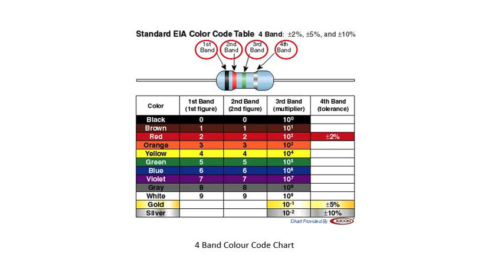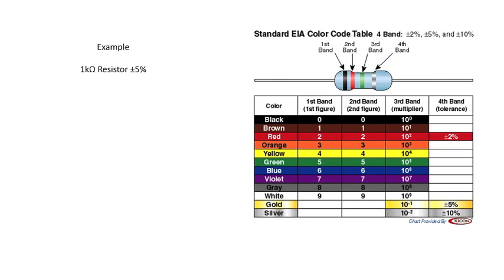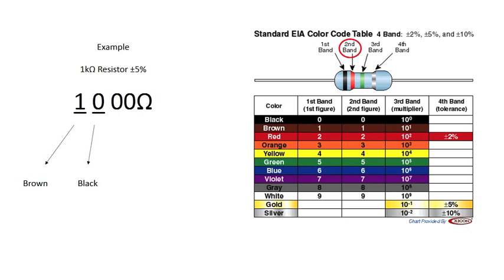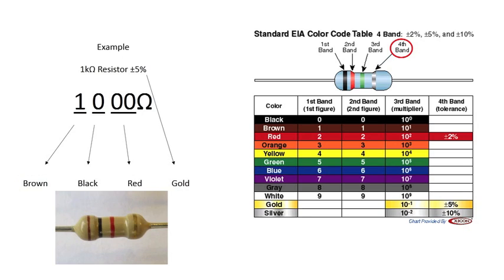Let's do an example. For a 1k resistor plus or minus five percent, we see that as a thousand ohms. The first digit, one, is represented by brown. The second digit, zero, is represented by black, and after the second digit there are two zeros, so our multiplier is red, and then the plus or minus five percent is represented by a gold band. And there we have our brown, black, red, gold resistor representing a thousand ohms.